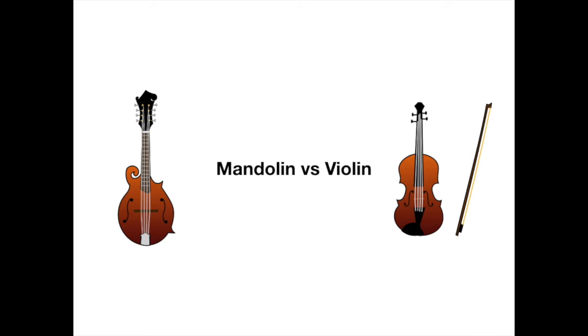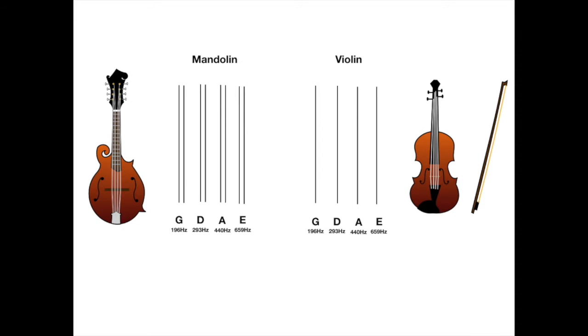Comparing a mandolin with a violin, what they have in common are the string pitches and tuning. Both are tuned G-D-A-E, and the strings produce the same frequencies. Because of this, they use the same musical notation. If you can read violin music, you can play it on the mandolin, no translation required.